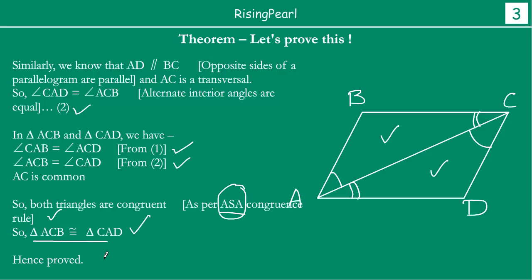Hence we say it is proved. We were given ABCD is a parallelogram and we had to prove that the diagonal divides the parallelogram into two congruent triangles, and we have gone ahead and proved it. In the next episode we are going to come back with another theorem and another proof. Thank you, friends.